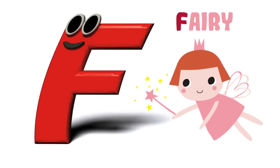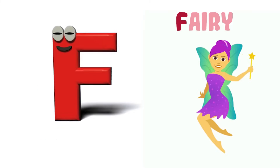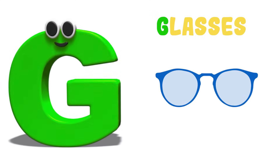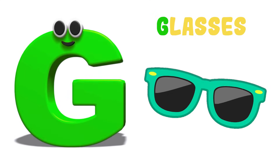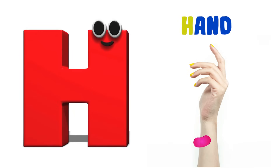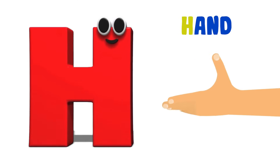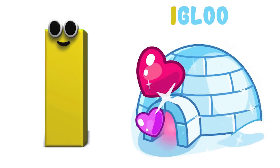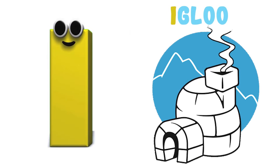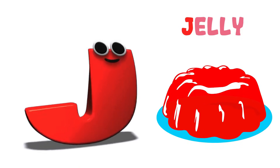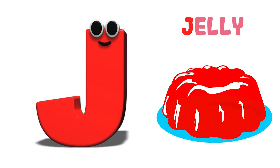F is for Fairy. F-Fairy. G is for Glasses. G-G-Glasses. H is for Hen. H-H-Hen. I is for Igloo. I-Igloo. J is for Jelly. J-J-Jelly.